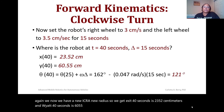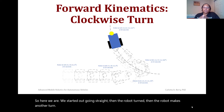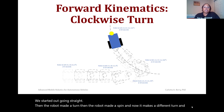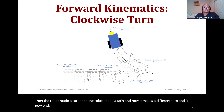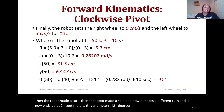The angle of the robot is now 121 degrees. Looking at the trajectory: the robot went straight, then made a turn, then made a spin, and now makes a different turn — ending up at approximately (24 cm, 61 cm) at 121 degrees.